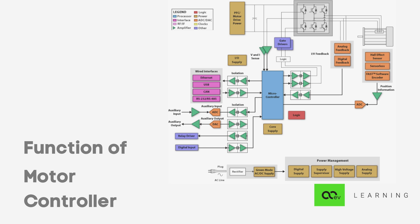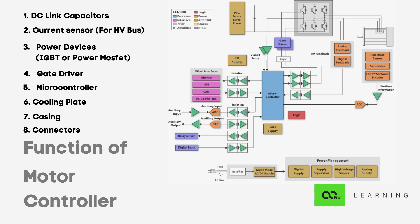The motor controller consists of the following: the DC link capacitors, the current sensor, power devices which we to some extent discussed earlier, gate driver, microcontroller, cooling mechanism or cooling plates, casing and connectors.